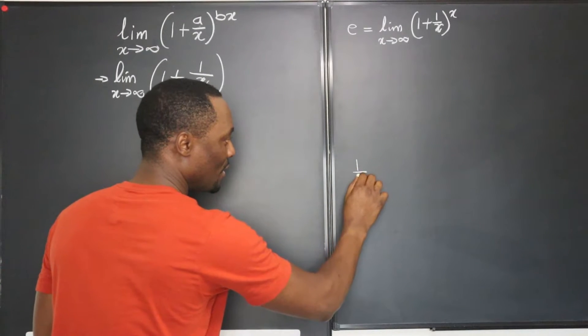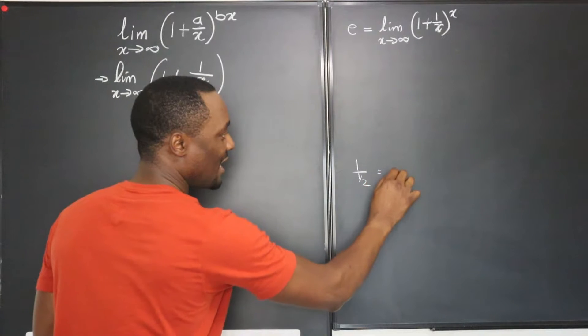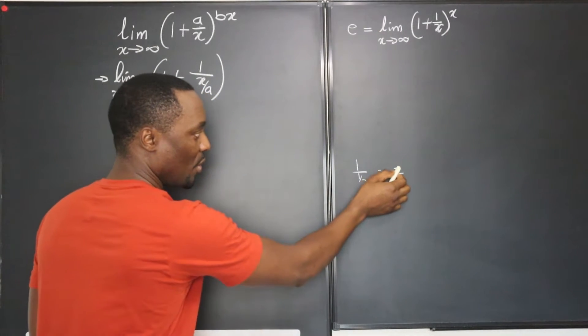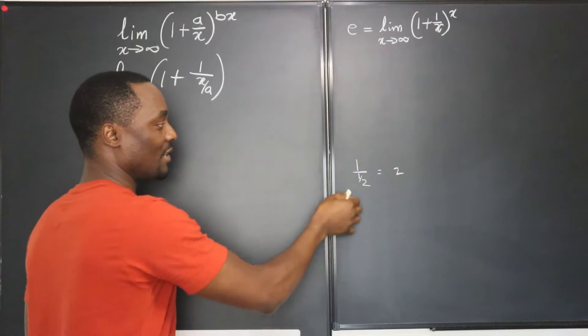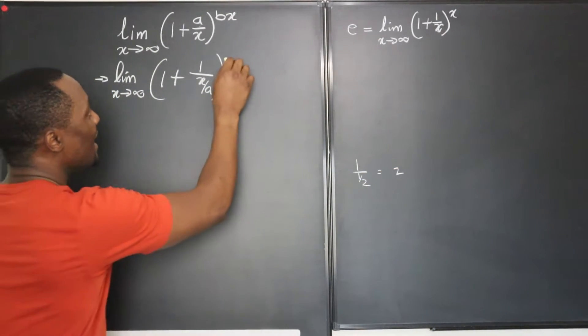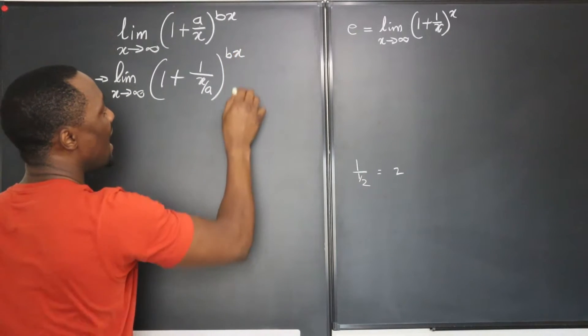You see that 1 over 1 over 2 is the same thing as just writing 2 because you took the reciprocal of 2 and took the reciprocal of that, so you end up with 2. So that's the principle we're using here and that will be raised to power bx.